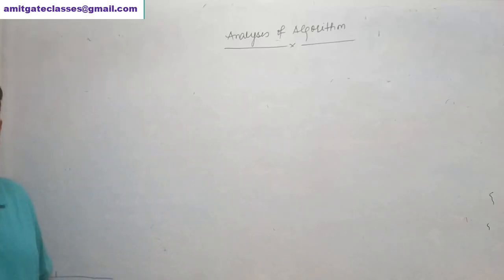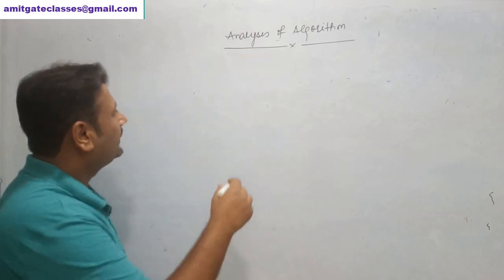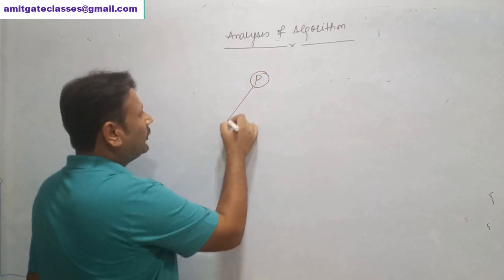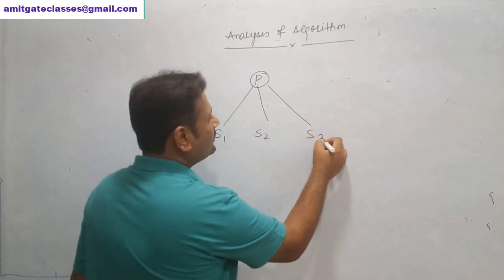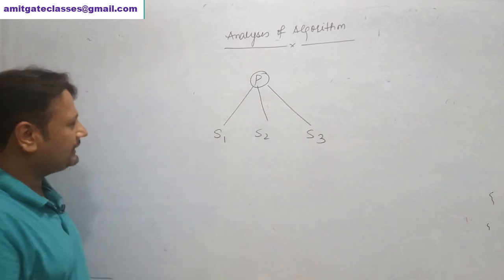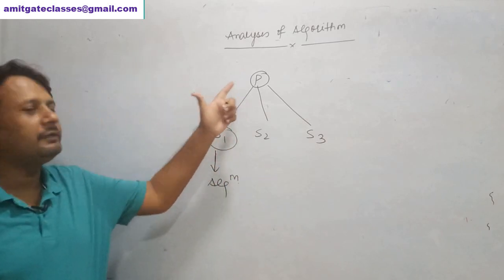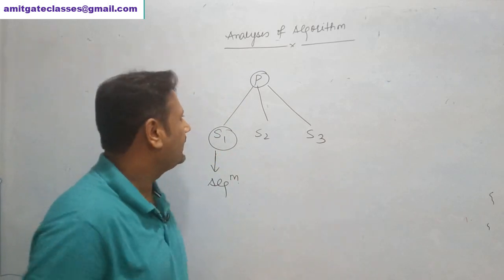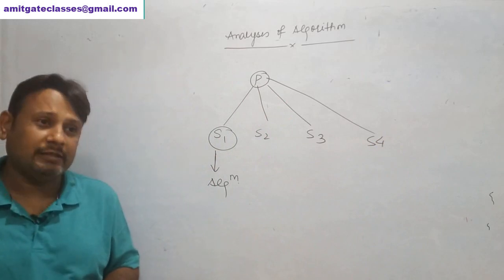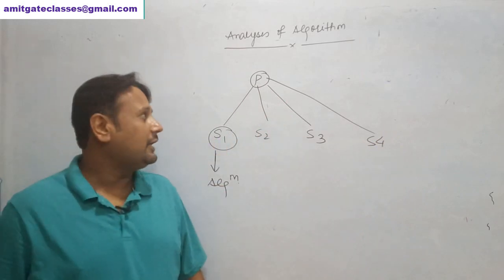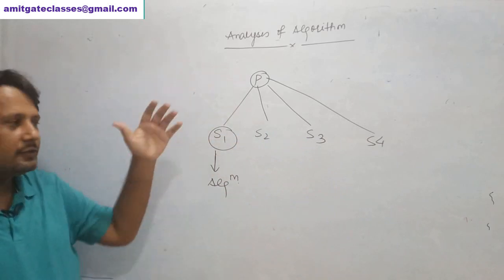We will be starting with analysis of algorithm. What is analysis of algorithm? For any problem, we can have multiple solutions — solution number one, solution number two, solution number three. So for one problem, we can have multiple solutions; it can be two, three, four, five, up to ten or maybe a hundred. Now, being a computer scientist, what is our role?